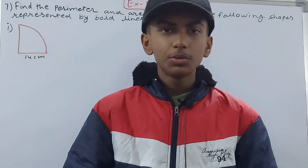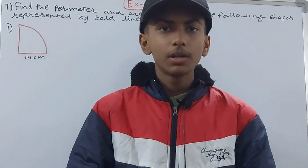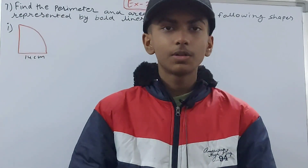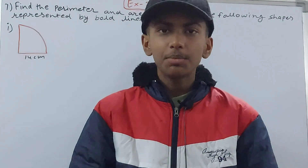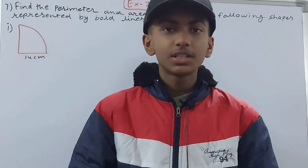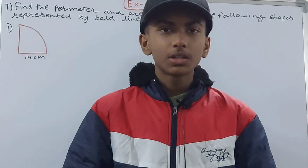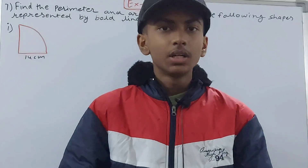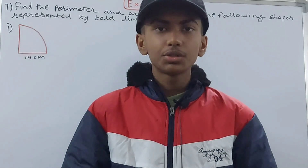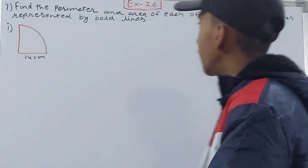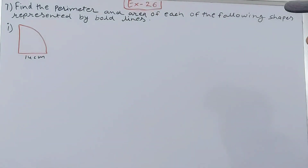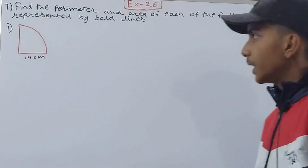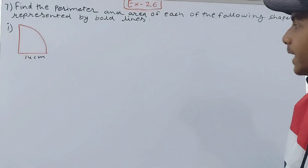Hello friends, welcome back to my YouTube channel Local Learning. In this video we are going to solve ICSE Mathematics Class 8, Chapter 26: Circumference and Area of a Circle, Exercise 26, Question Number 7. This is: find the perimeter and area of each of the following shapes represented by bold lines.